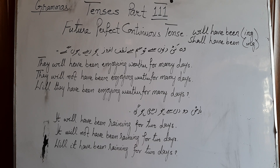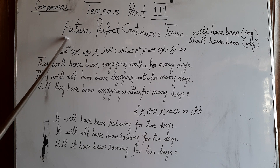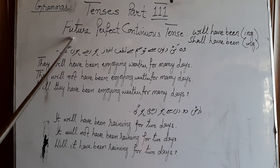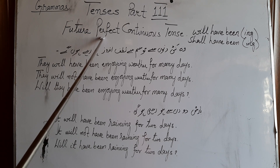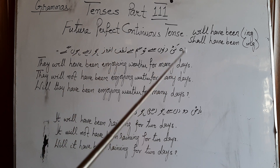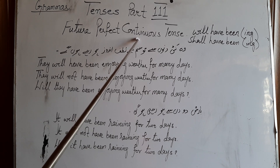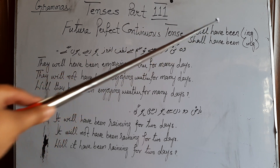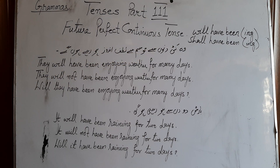Coming to future perfect continuous tense: 'future' means we have to use will and shall; 'perfect' means we have to use have, because in perfect tenses we always use have, has, and had; 'continuous' means we have to use ing with verb. So together it becomes will have been, shall have been, and ing with verb.